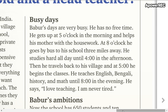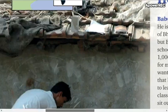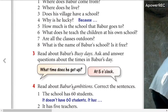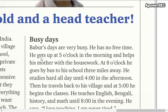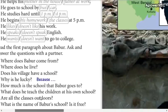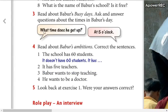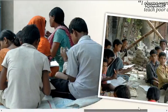You are going to ask questions using these times. For example, here the first one: he gets up at five o'clock, so the question is 'What time does he get up?' and the answer is 'At five o'clock.' So you're going to ask questions about the times in Babur's day. This is the first question, the other question...